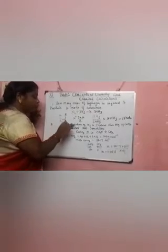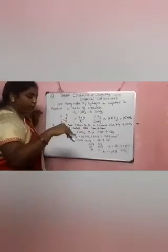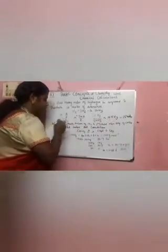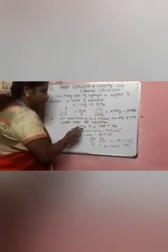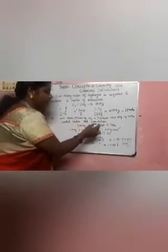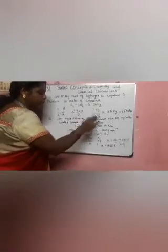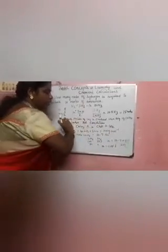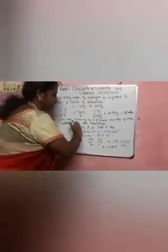Second problem: how much volume of carbon dioxide is produced when 50 grams of calcium carbonate (CaCO3) is heated under standard conditions? First, write the equation: CaCO3 when heated gives CaO + CO2. Confirm it is balanced: calcium 1 = 1, carbon 1 = 1, oxygen 3 = 2+1 = 3. So it is a balanced equation.